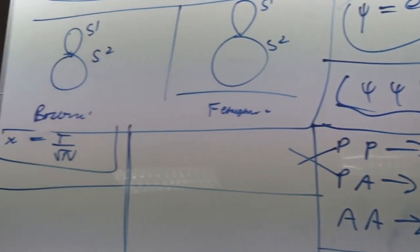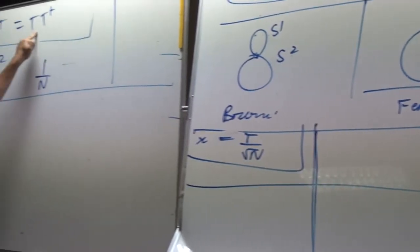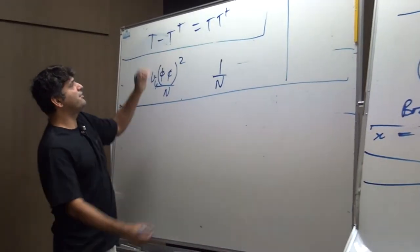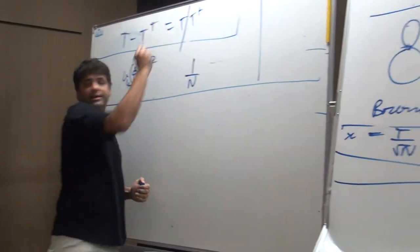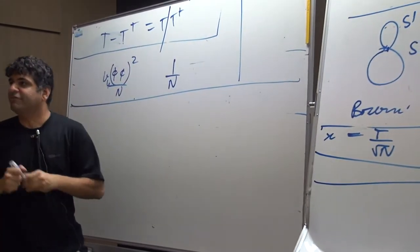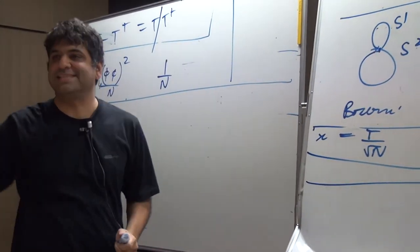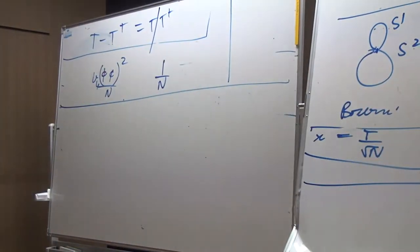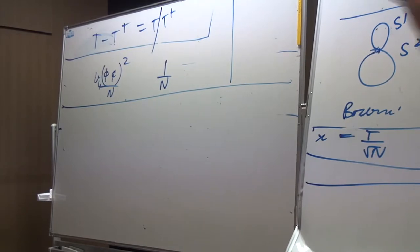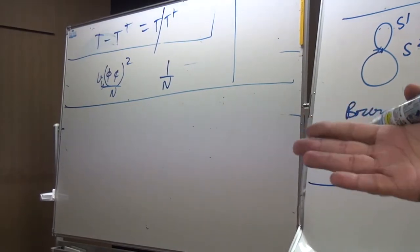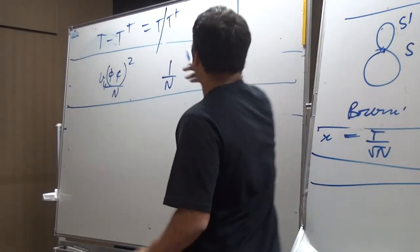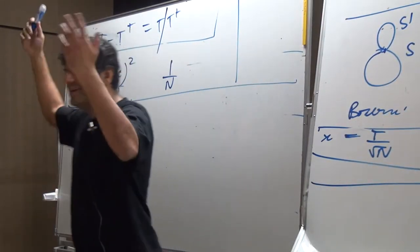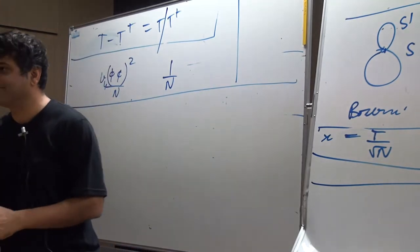Moreover, normally in the unitarity relation when you cut here, you have to put all processes in — when you do two-to-two scattering on the left-hand side, in this cut you should include two-to-four scattering, two-to-six scattering, everything.